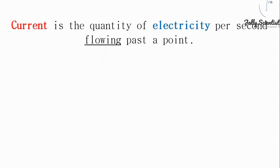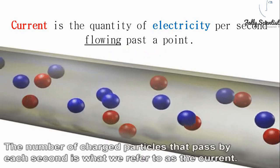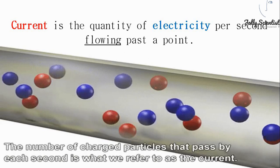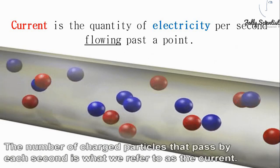Current. An electrical current is a quantity of electricity per second flowing past a point. In other words, the number of charged particles that pass by each second is what we refer to as the current.